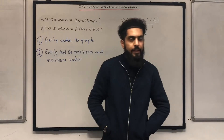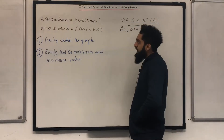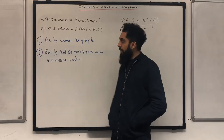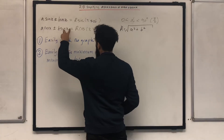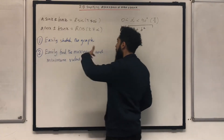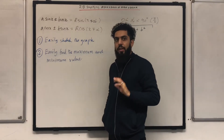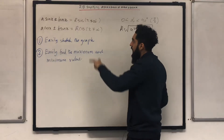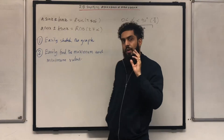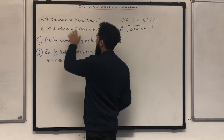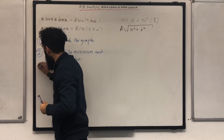One more reason: take the second expression — A cosX ± B sinX — and set it equal to, say, 1 over 7. Solving that equation is more challenging compared to solving R cos(X ± α) = 1 over 7. So the third reason is that we can easily solve trigonometric equations.